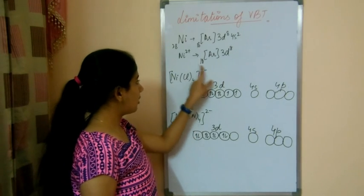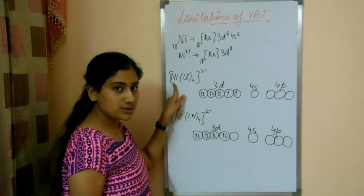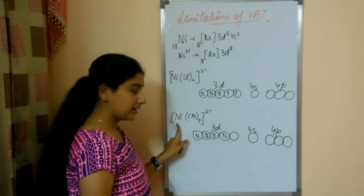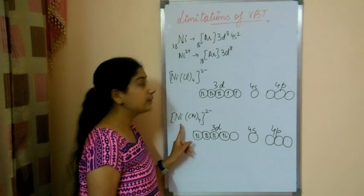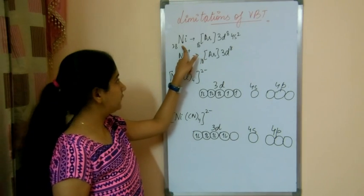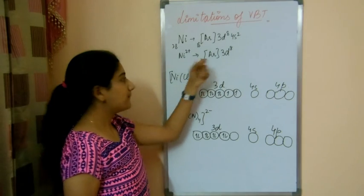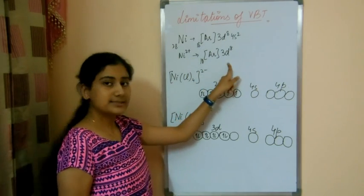Now in this compound we can say that the oxidation state of nickel is plus 2. Similarly here also, if we calculate, the oxidation state of nickel will be plus 2. The ground state electronic configuration of nickel is 28 with 4s2, but nickel 2 positive is this.